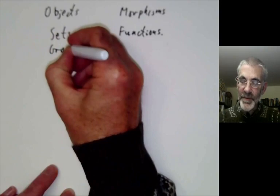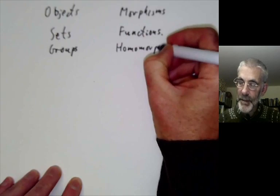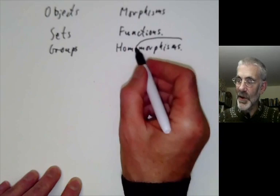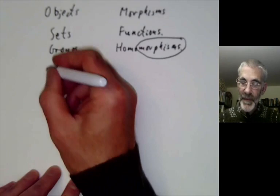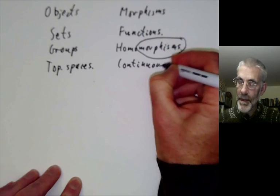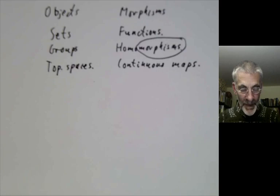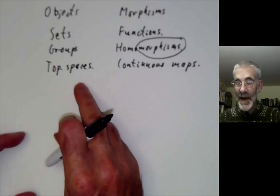Another category is the category of groups. Here we want the morphisms to be nice functions between groups — they should preserve the group structure, and these are called homomorphisms in group theory. The word 'morphisms' for a category sort of comes from the word 'homomorphisms' of group theory, just by dropping the first syllable. Another example would be topological spaces, and the nice functions between topological spaces are the continuous maps, so the morphisms of the category of topological spaces are the continuous maps.